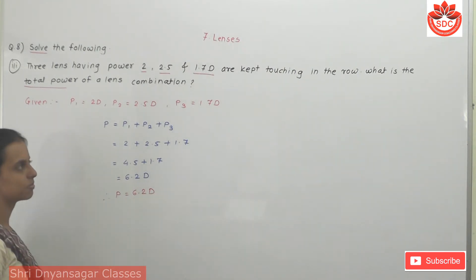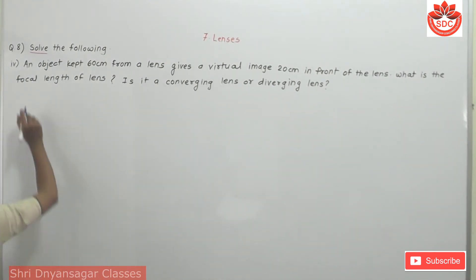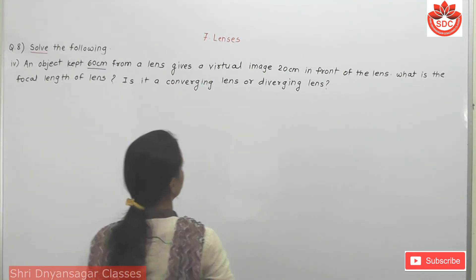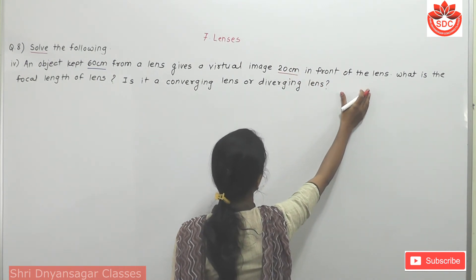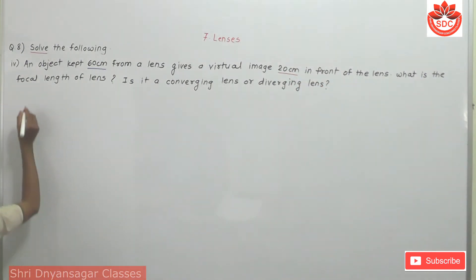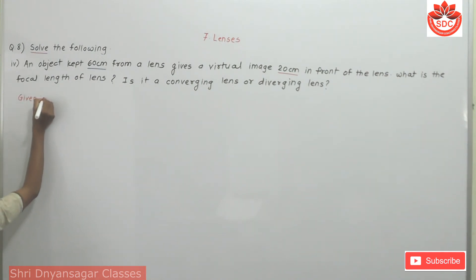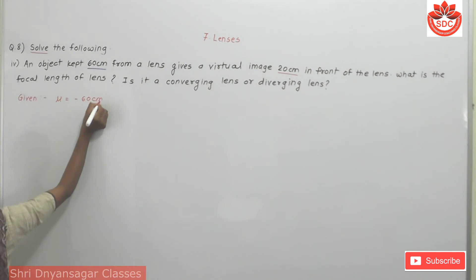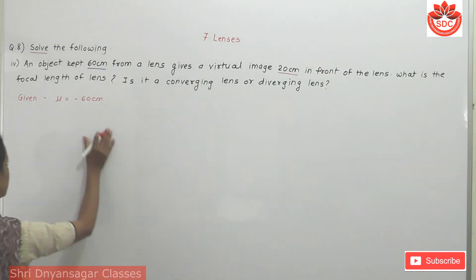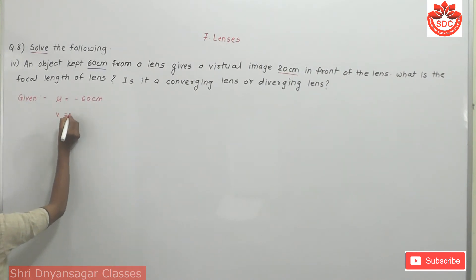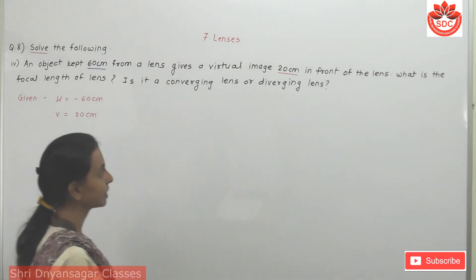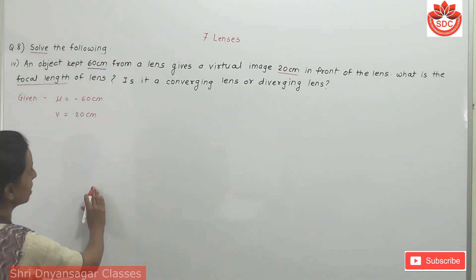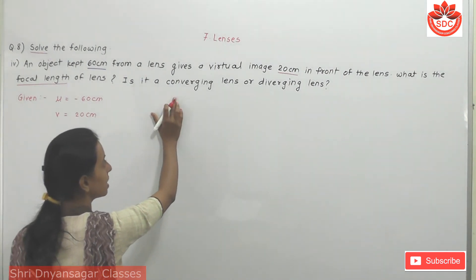This is the answer to the third question. Fourth question: an object kept 60 cm from a lens gives a virtual image 20 cm in front of the lens. First we write the given: the distance of object U is equal to minus 16 cm. The image is on another side so V is equal to 20 cm. We need to find the focal length of the lens, and determine whether it is a converging or diverging lens.